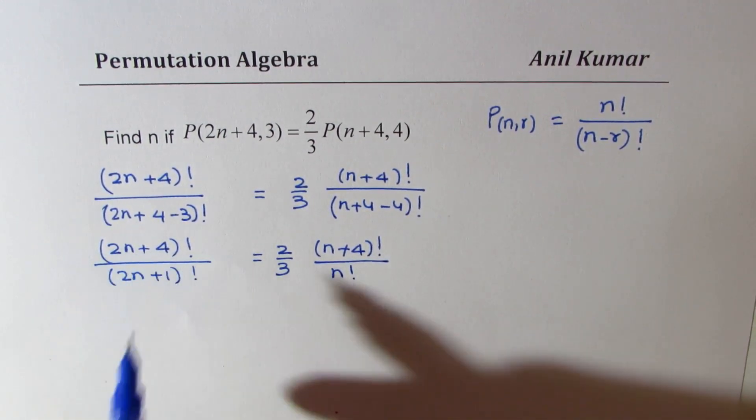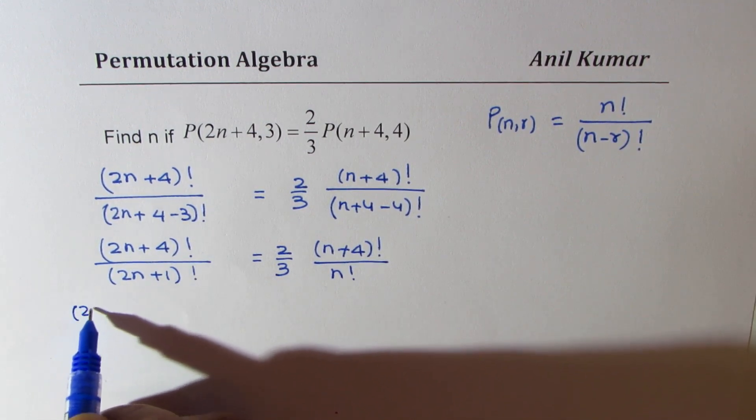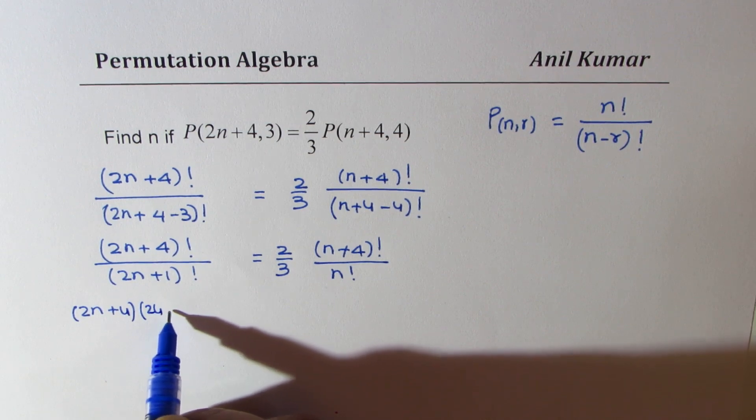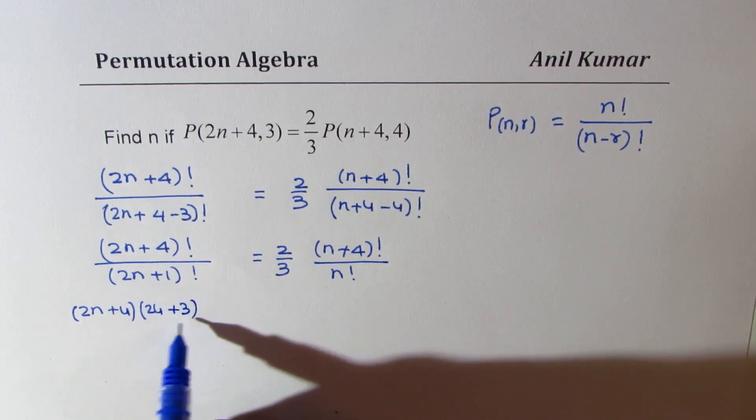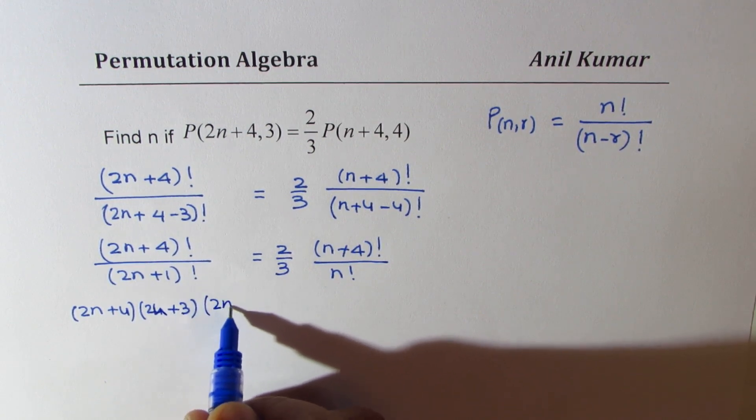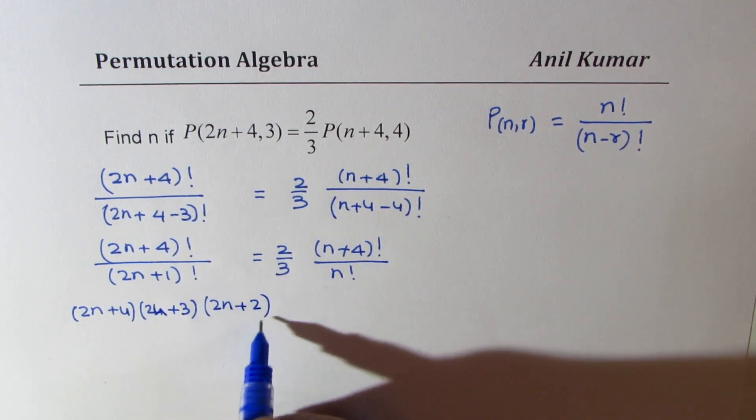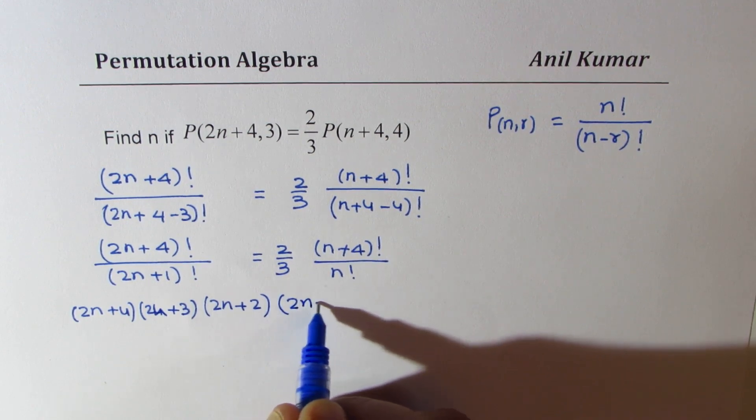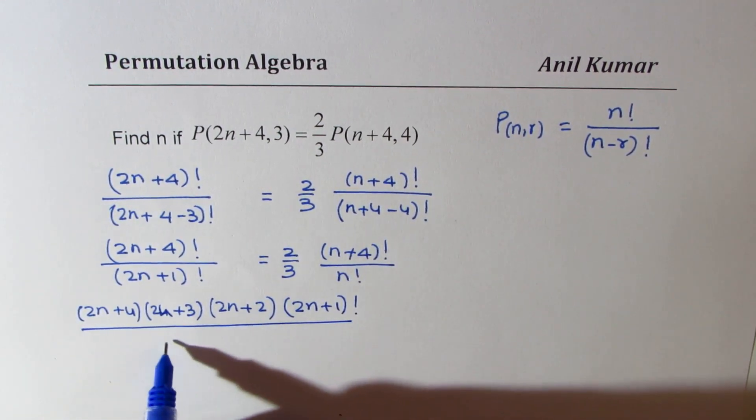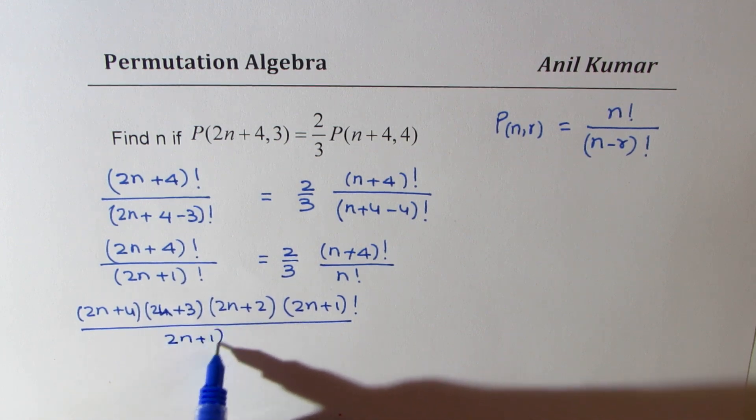Now let us expand this. So we get (2n+4) times (2n+3) times (2n+2), and then we can also write this as (2n+1) factorial divided by (2n+1) factorial.